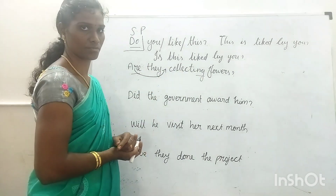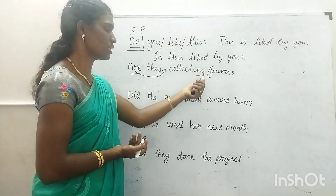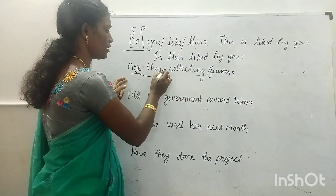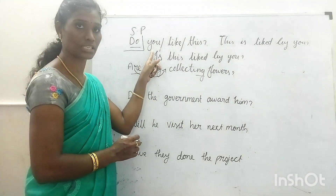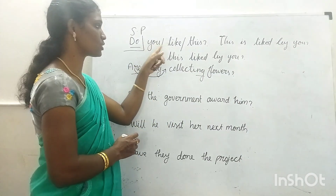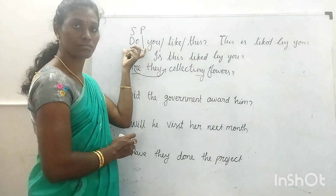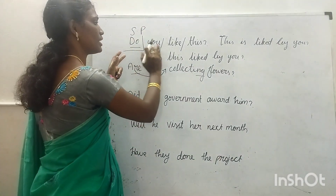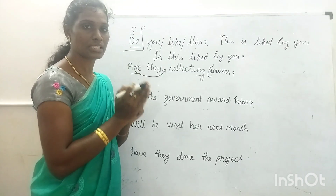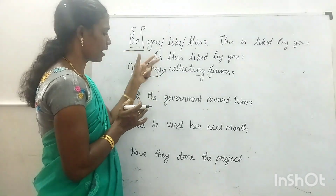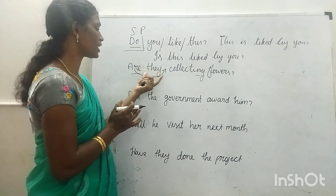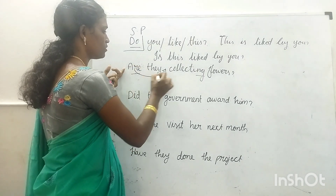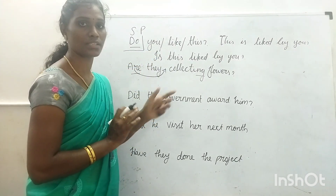For simple present and simple past, it is different because when we frame the question there is no 'be' form — we include an auxiliary variable, so we remove that word to get the statement. For all remaining tenses, we simply bring the 'be' form after the subject to get the statement. So the sentence 'They are collecting plus' — change into passive form. Object changes into subject: 'plus' is plural, so the 'be' form used is 'are'. For continuous tense we include 'being', so: 'Plus are being collected.'